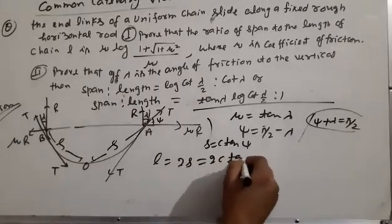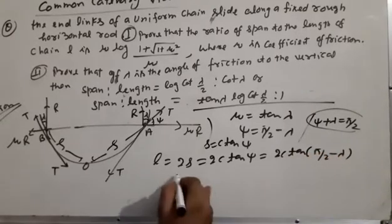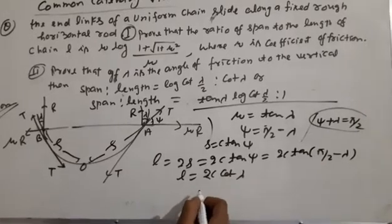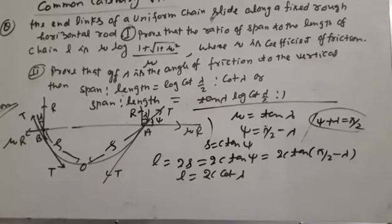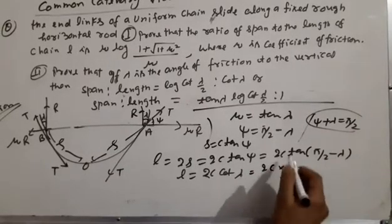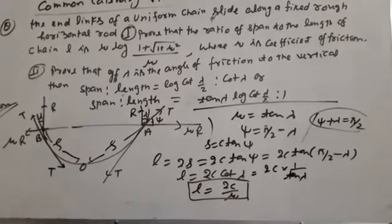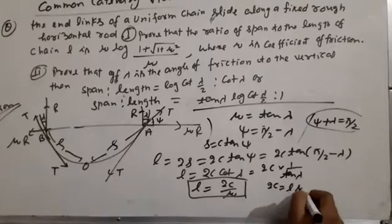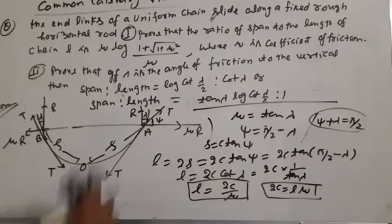S equals 2c·tan(psi). Substituting the psi value: psi equals phi/2 minus lambda. So L equals 2s equals 2c·tan(phi/2 minus lambda). For the first portion, we find the maximum span 2x.